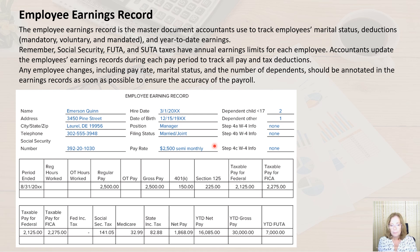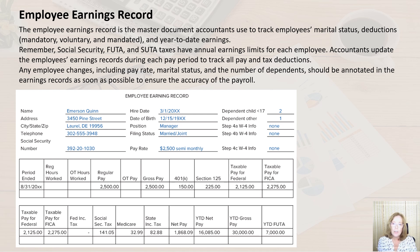The next two sections show the period end date, hours worked, gross pay information, pre-tax deductions, and taxable wages, as well as withholdings and deductions, net pay, and FUTA. I would probably want to add more details around the other deductions and perhaps additional columns for pre-tax deductions. In addition, I would likely add a column for FUTA and SUTA taxable wages.